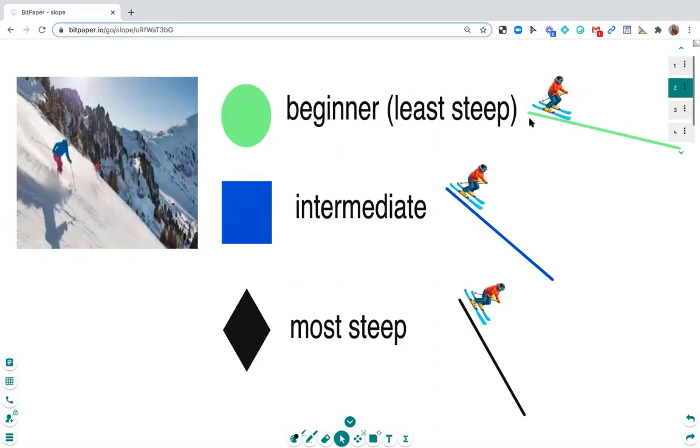Then we have the intermediates or the blues, which are semi steep, but not super steep. And then we have the most steep, which are the blacks or the double blacks, which are really steep and the most dangerous. So that's one way to remember what slope means is to think about ski slopes.